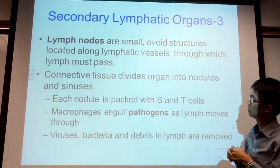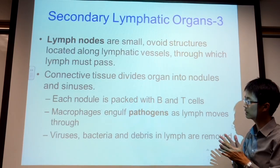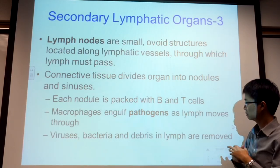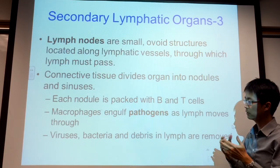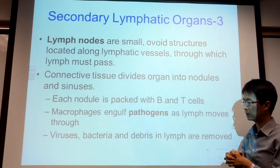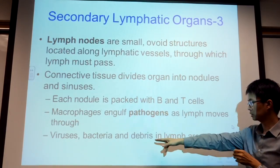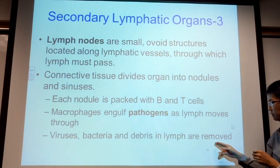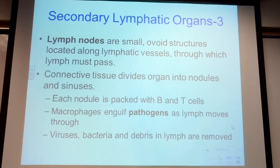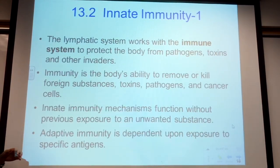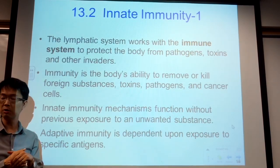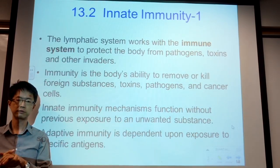Lymph nodes are divided by connective tissue into nodules that contain many B cells and T cells — it is where the immune battle occurs, and viruses and bacteria in the lymph are removed. This concludes the lymphatic system; we are now going to start with the immune system.